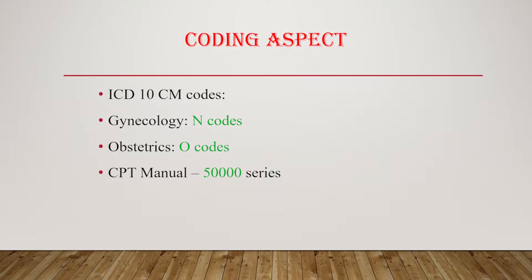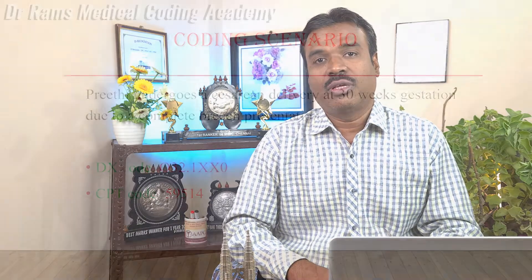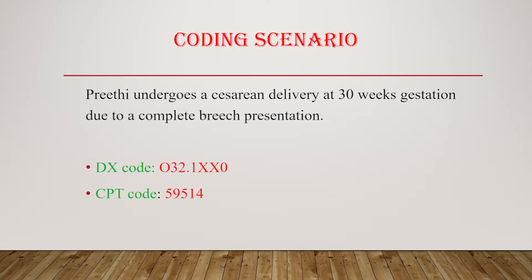Let's see the coding aspects of gynecologic and obstetric coding. We will find all these conditions listed in the ICD-10-CM. Obstetric condition codes begin with the alphabet O, and gynecologic conditions begin with the alphabet N. The procedures for both specialties are classified under the female reproductive system of the CPT coding manual. For example, if Preeti undergoes a cesarean delivery because of a breech presentation of the fetus, the diagnosis code is O32.1XX0 and the CPT code is 59514.